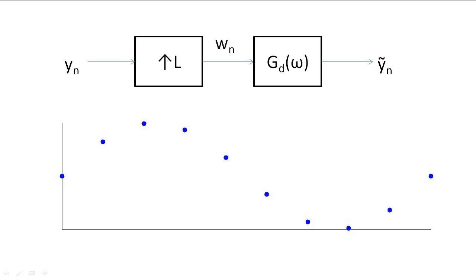For the rest of the lecture, let's suppose that we want to triple the sampling frequency of our signal. We can interpolate to 3 times the sampling frequency using two steps.